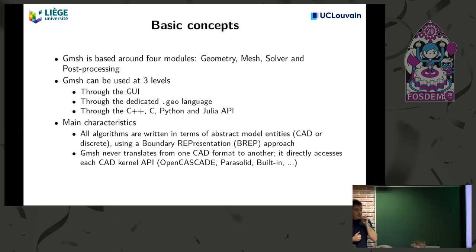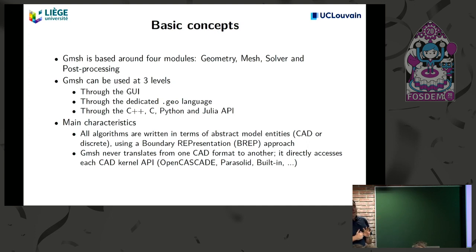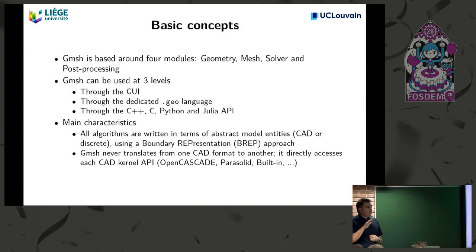One main characteristic underpinning everything in Gmesh is that it is CAD-agnostic: all algorithms are written generically so you can attack natively very different geometrical representations. One representation we support is OpenCASCADE, but we never translate — we use each kernel's native representation directly for all geometric operations and meshing.